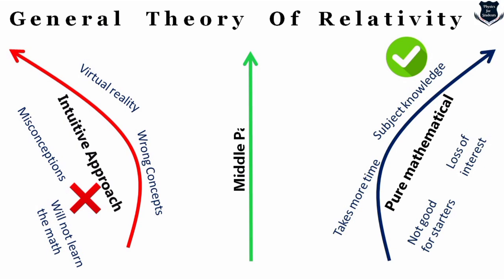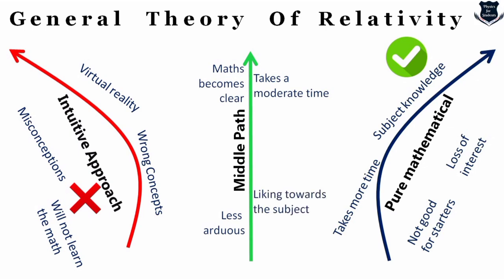If you're not taking an intuitive approach and not taking a pure mathematical approach, what approach can we take? We take a middle path — this is what you're going to adopt in this video. Here the math becomes clear, it is less arduous, it takes moderate time, there is good liking towards the subject, and most importantly it has a mathematically intuitive approach. The approach we're taking will have both intuitive and mathematical elements, making it clear while keeping the mathematics also intuitive.